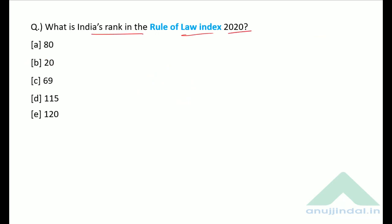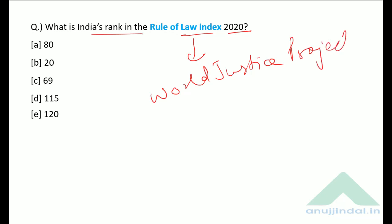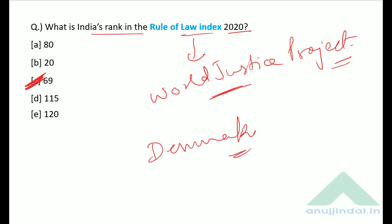What is India's rank in the Rule of Law Index 2020? This index was launched by the World Justice Project to measure the effectiveness of rule of law in countries. The index is topped by Denmark and India's rank is 69 — option C is the correct answer.